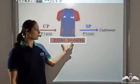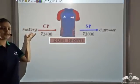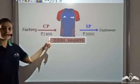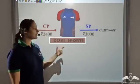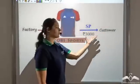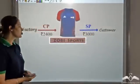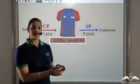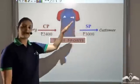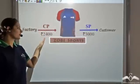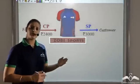There is a shop called Zobie Sports which buys a t-shirt from a factory for 2400 rupees. So the cost price of Zobie Sports is 2400 rupees and they sell it to the customer for 3000 rupees, so the selling price is 3000 rupees. We know the cost price, we know the selling price, so we can find the profit. Profit would be selling price minus cost price, which is 600 rupees.